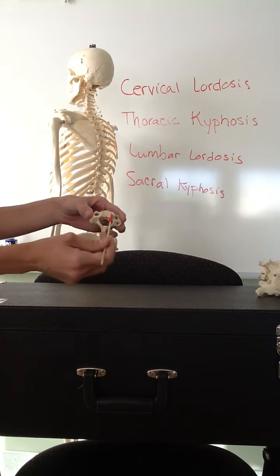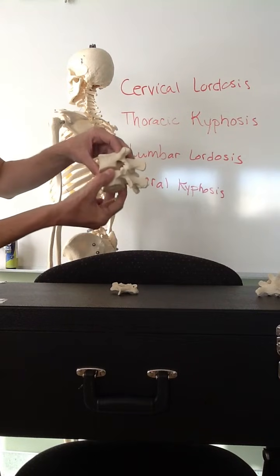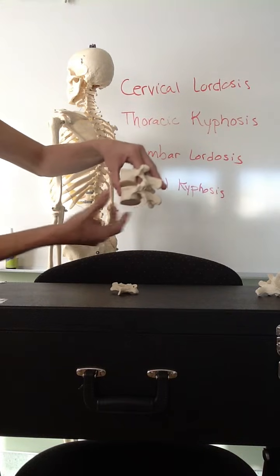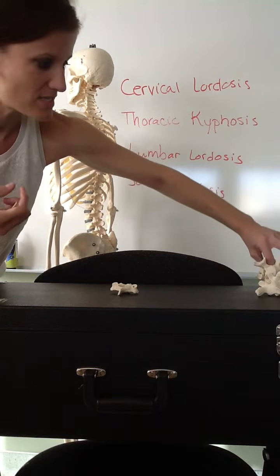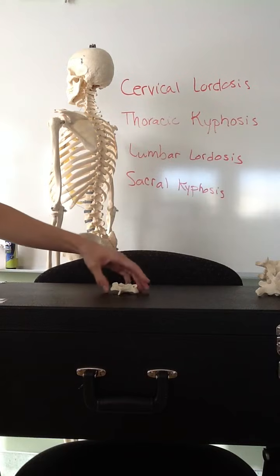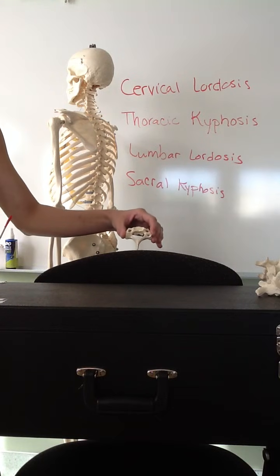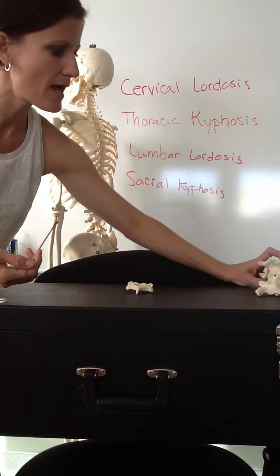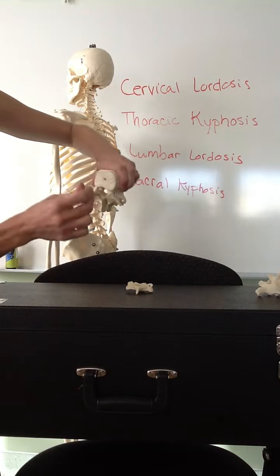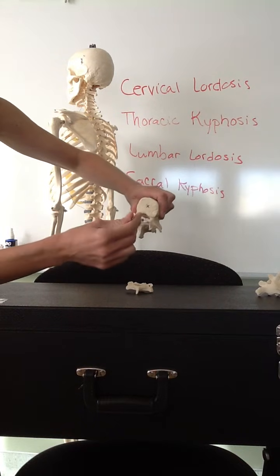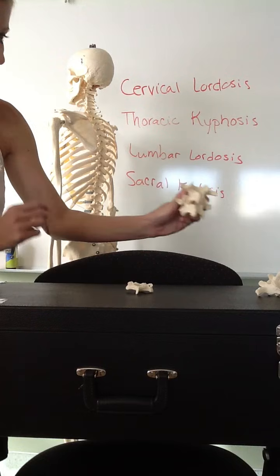The vertebral body is where the vertebrae stack on top of each other, one after the next, and it supports most of the weight on the spinal column. In between each of these bodies, we have a cartilaginous disc that helps absorb shock. Finally, the major hole in the center of each vertebra is the vertebral foramen. When the vertebrae are all lined up, these vertebral foramina align to create the vertebral canal or spinal canal, where the spinal cord travels down from the brain to the bottom of the spinal column.